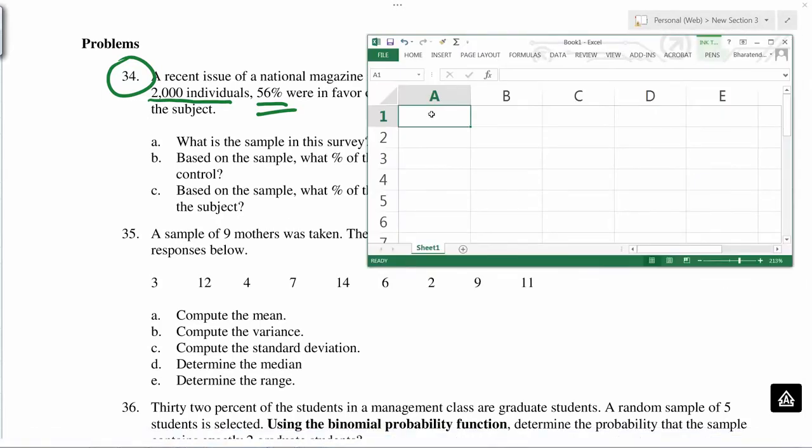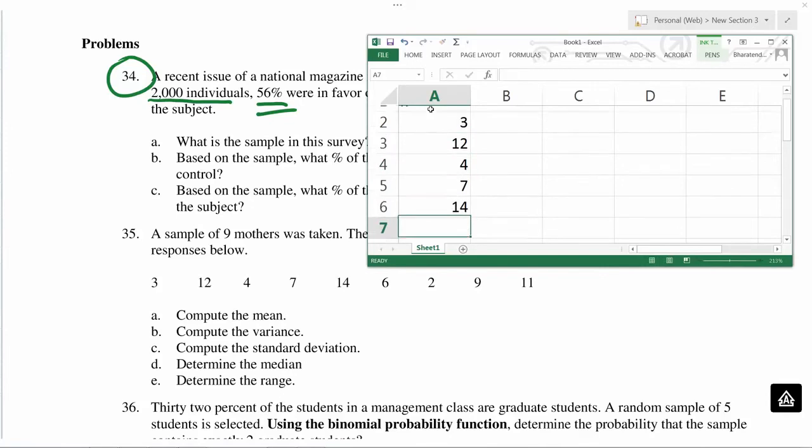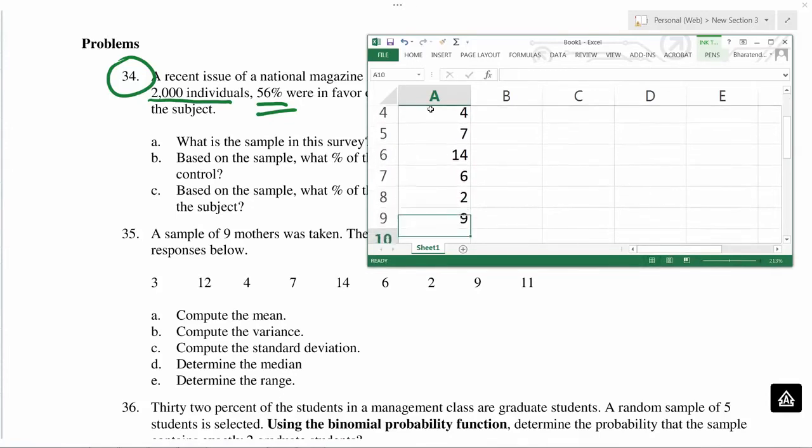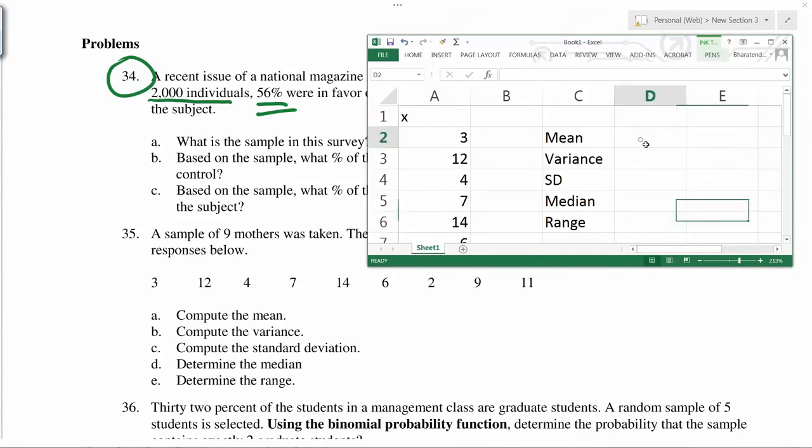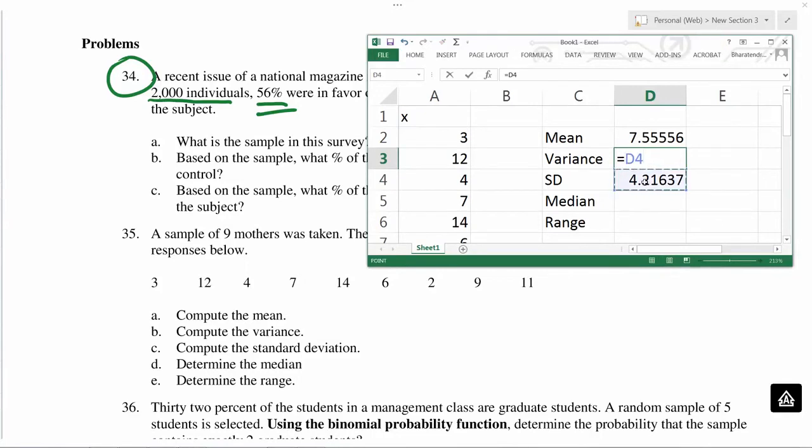Sample of nine mothers, so this is the data available. Let's put this data in Excel. So suppose this is some random variable x, and we have 3, 12, 4, 7, 14, 6, 2, 9, and 11. To calculate average, the formula is average equals average, and then you select this entire column, close the bracket. That's the average. Calculate the standard deviation for this data, and then variance is square of this. So equals this number, and then you square it. So that's the variance.